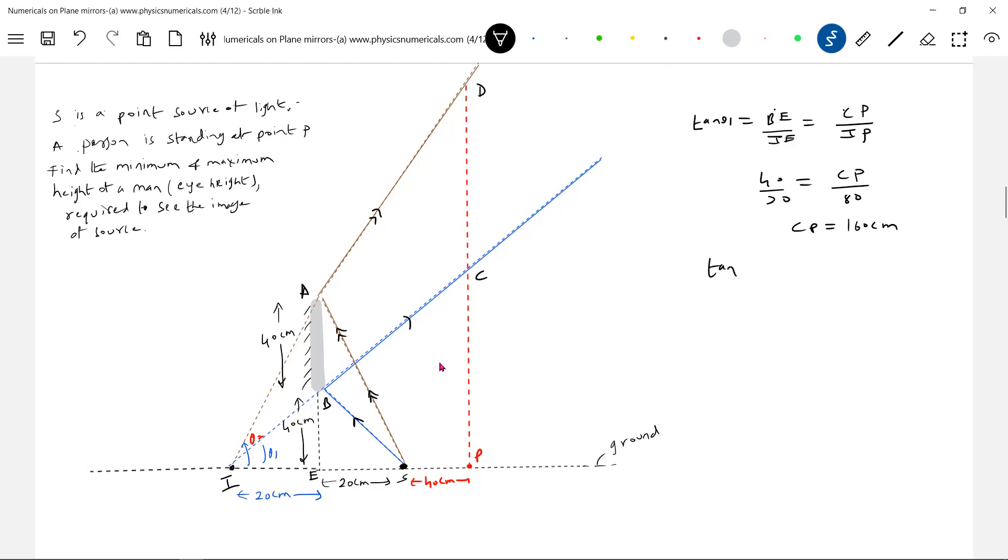Tan theta 2, I'm asking you to look at this triangle. May not be exact shape, but there's a triangle. Look at this triangle. Tan theta 2 is equal to AE by IE, should be equal to DP by IP. What is the distance AE? 20. IE is 20. DP we need to find. What is the value of IP? Will be 80. So 320 centimeters.